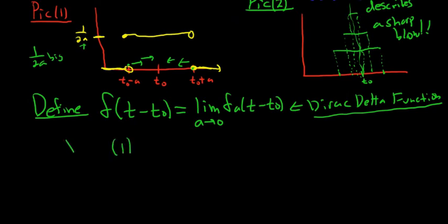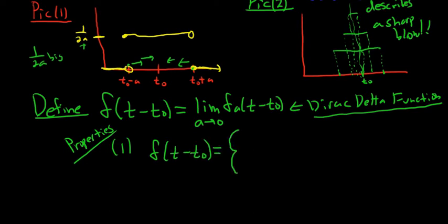Property one: you can think of it as having two outcomes. It's going to be equal to infinity if t is equal to t₀, and it'll be equal to 0 if t is not equal to t₀. It's either infinity or 0 — just boom or nothing.